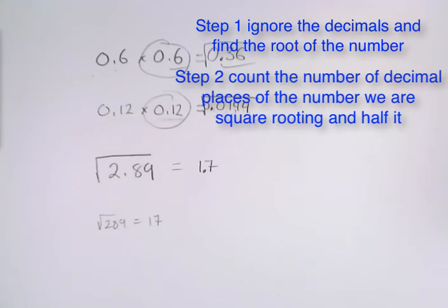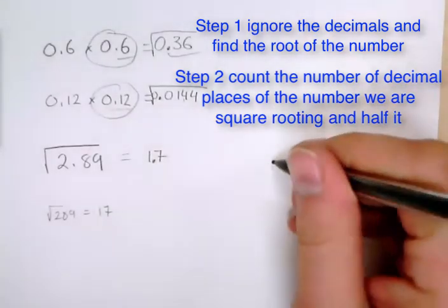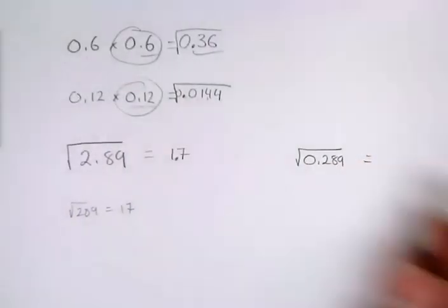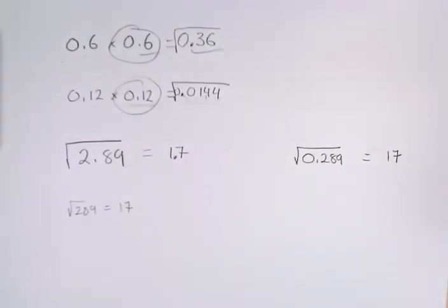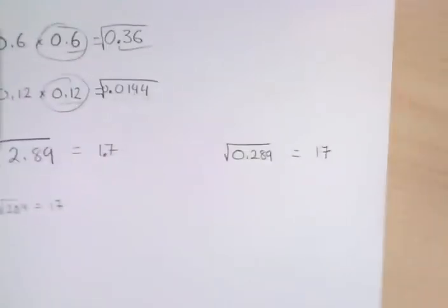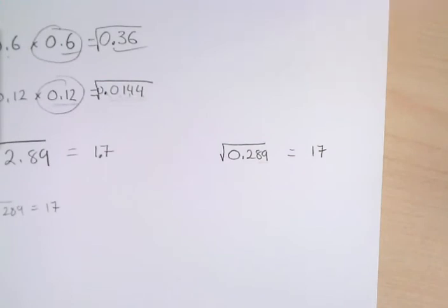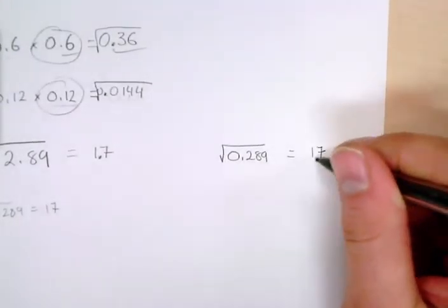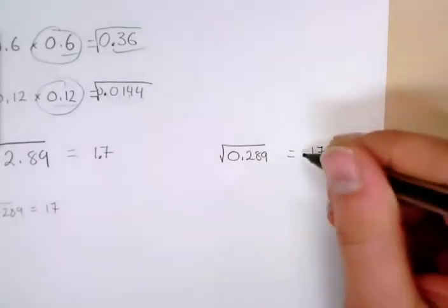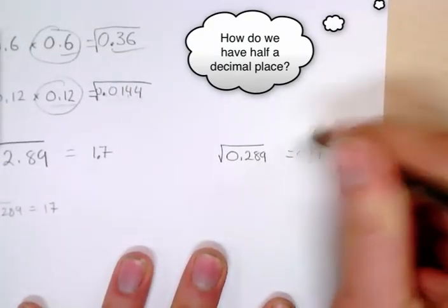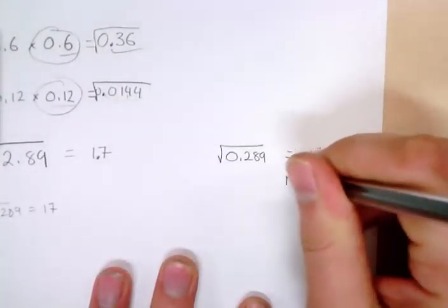Now let's look at the square root of 0.289. We know the square root of 289 is 17. But here's the problem — we have three numbers behind the decimal. So if we half that, we would need 1.5 numbers behind the decimal. If I put the decimal there and then put a 0 underneath the 1 — that doesn't make sense. You can't draw half a digit. So this here is not a perfect square.